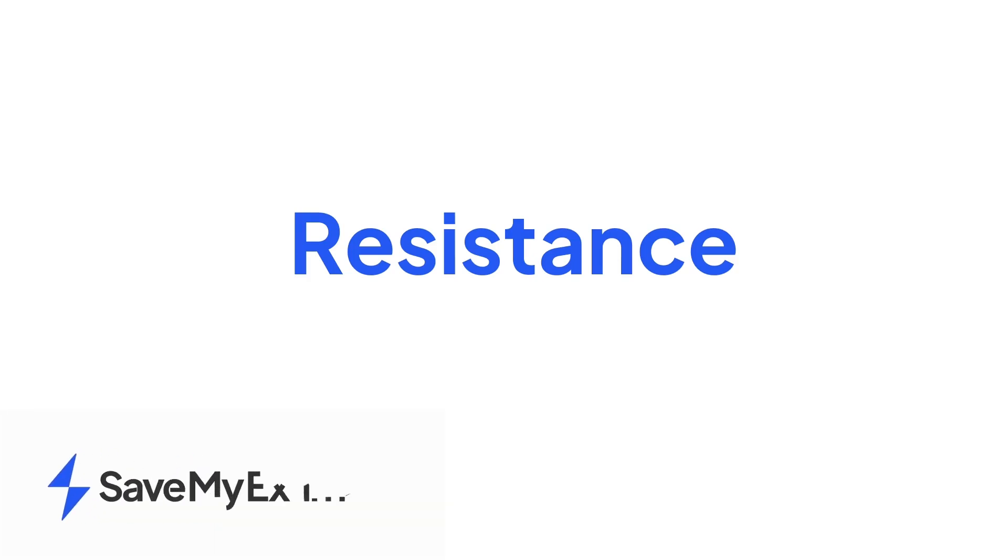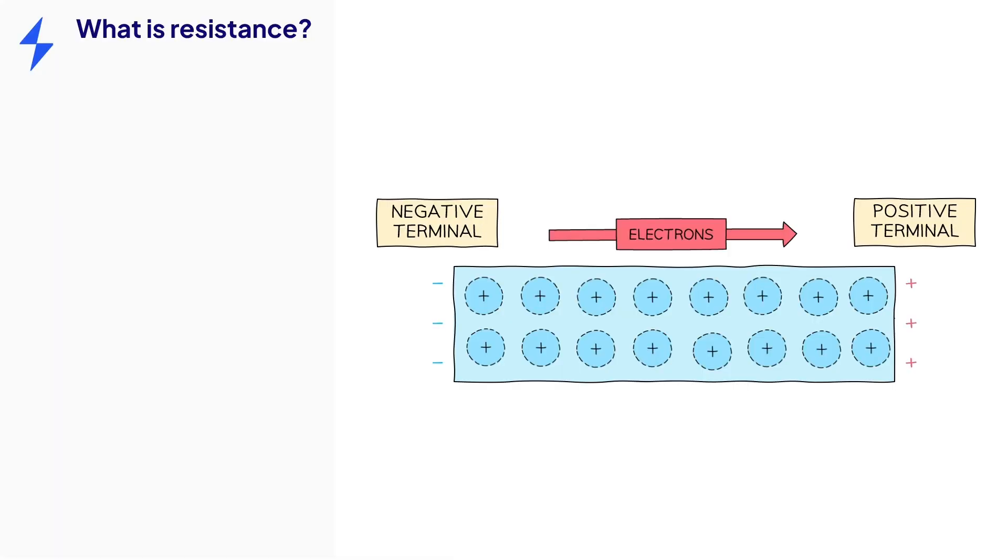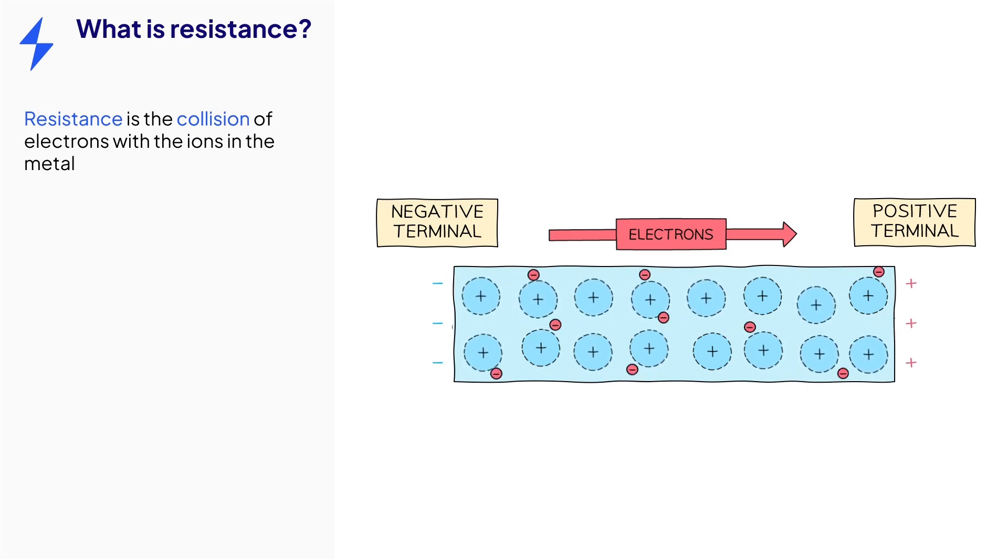This video is on the topic of resistance. Resistance occurs when flowing electrons collide with the ionic structure of the metal.